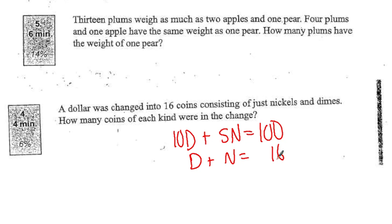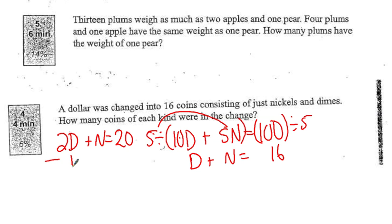So per usual, I want to get rid of one of my variables, either the d's or the n's. So one way I could do that is I could make n equal to 1 by dividing both sides of this by 5. Okay, 10 divided by 5 is 2. So I have two dimes left. 5 divided by 5 is 1. So I have 1n. And 100 divided by 5 is 20. And then I can subtract away my other equation.